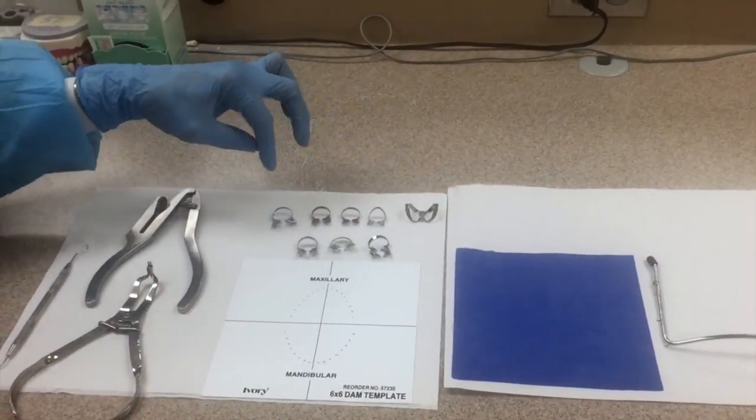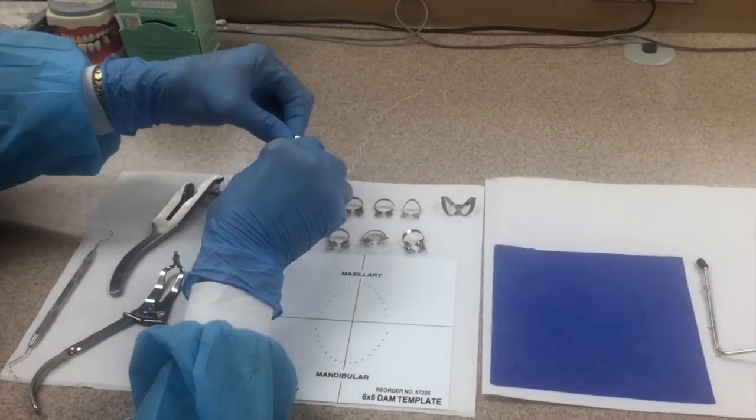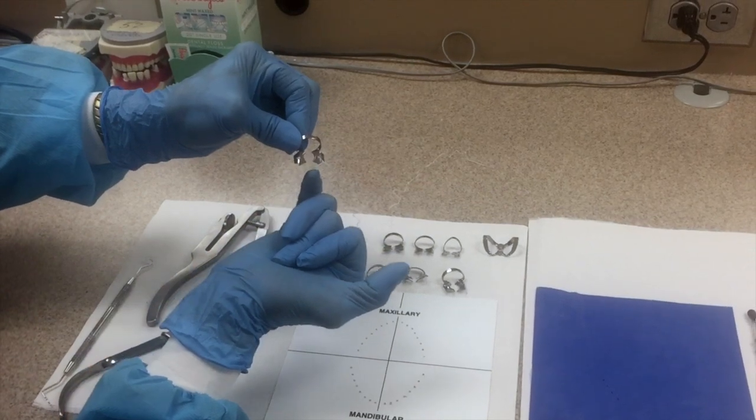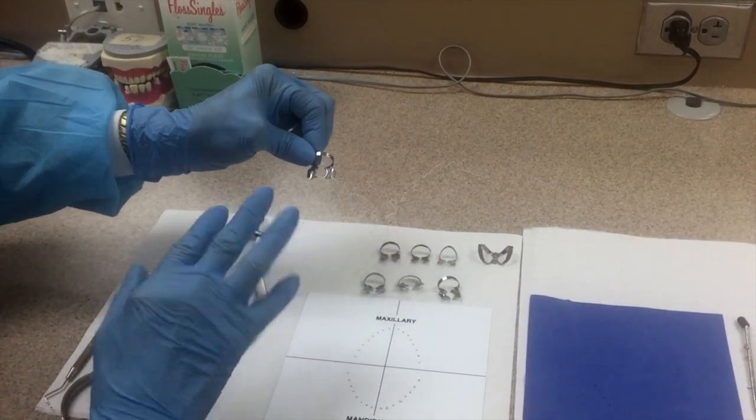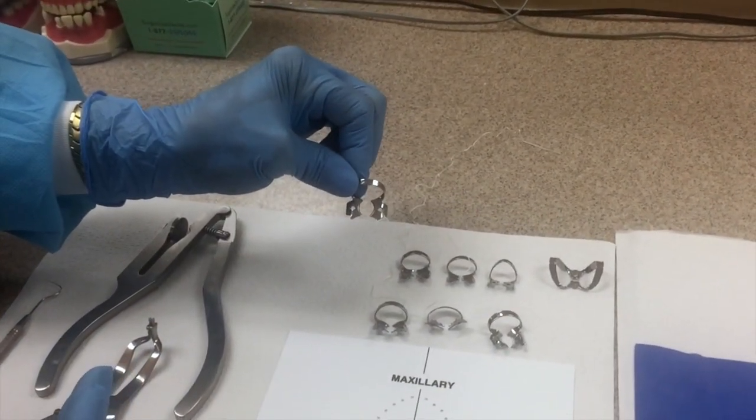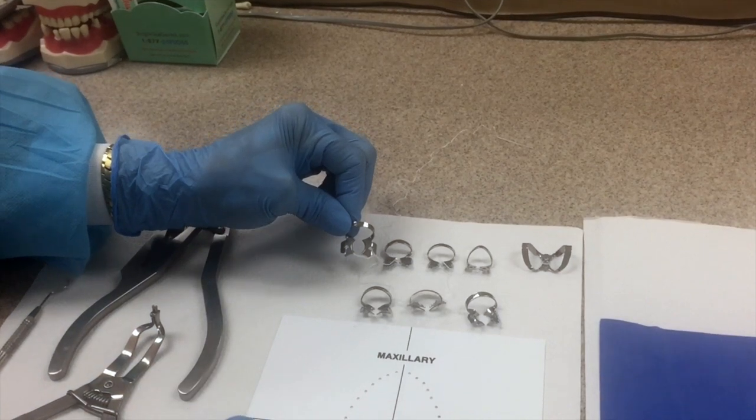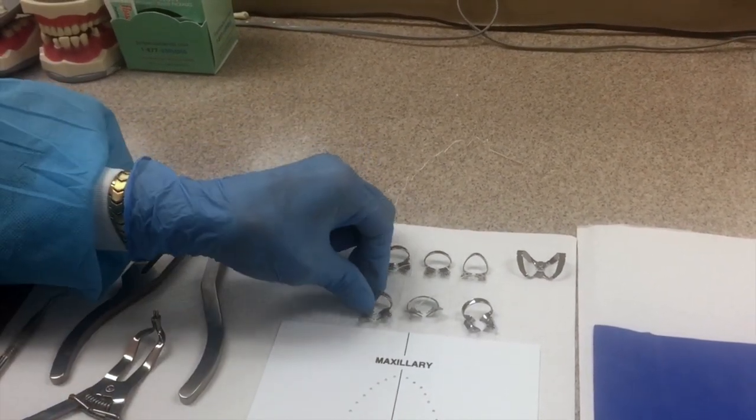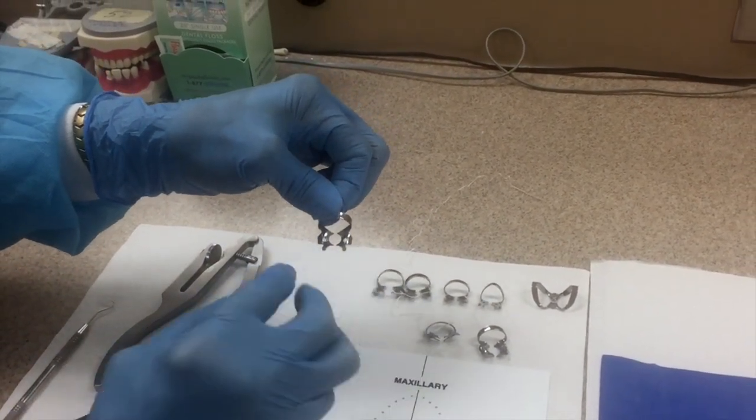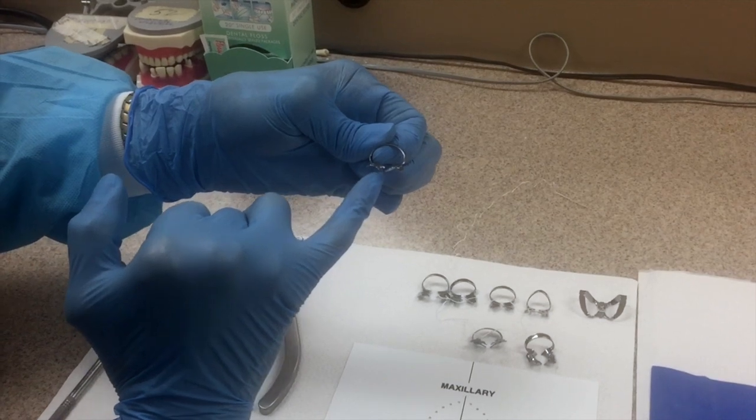These are the retainers or the clamps. On the first row I've got retainers without apically positioned prongs. Each prong, there's one, two, three, four - each prong must be stable on a tooth. If the tooth has a very flat contour or if the gingiva is really covering your prep and we need to pull the gingiva down so we can have good access, we can use an apically positioned prong.